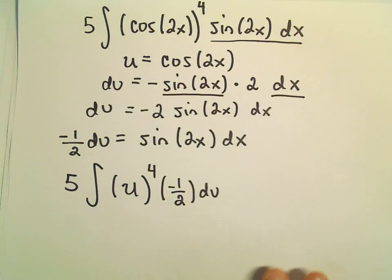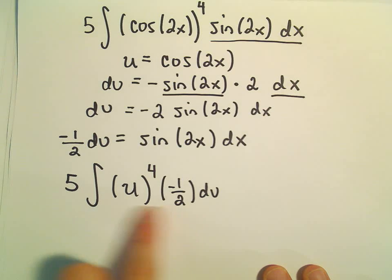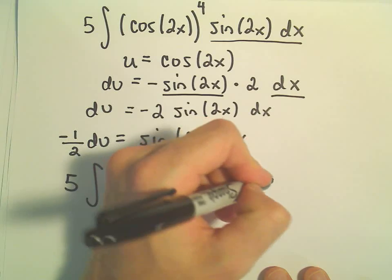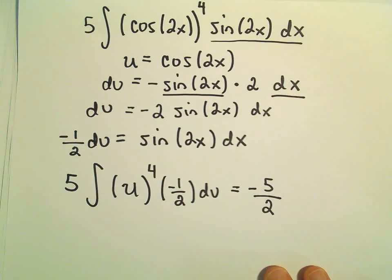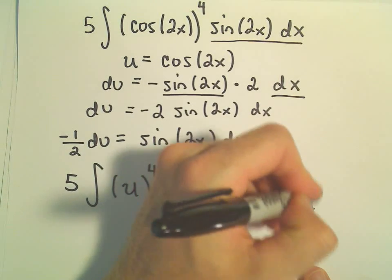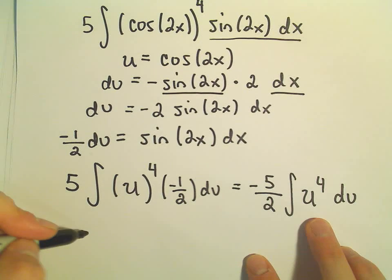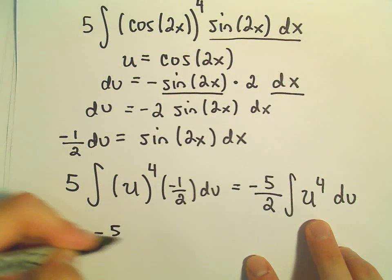And if you want to, you could pull, this is all multiplication, so you can pull the negative 1 half out front. And that would give us negative 5 over 2 when we multiply. And then we're just integrating a u to the fourth du. And that's about as friendly as they come anymore. So that'll give us negative 5 over 2.